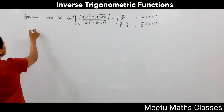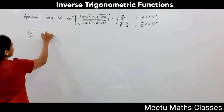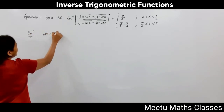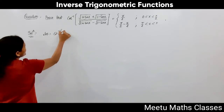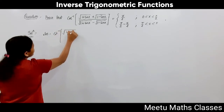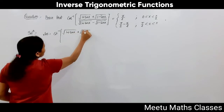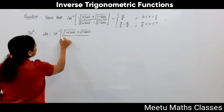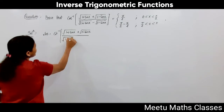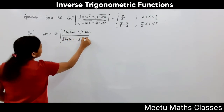So let us consider this function. The left hand side is cot⁻¹ of [√(1+sinx) + √(1-sinx)] / [√(1+sinx) - √(1-sinx)].